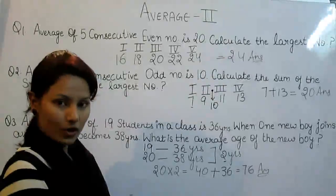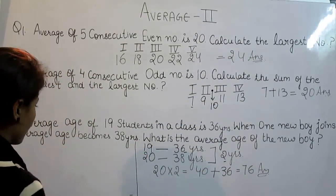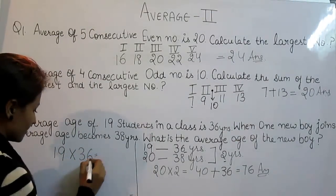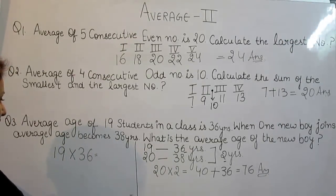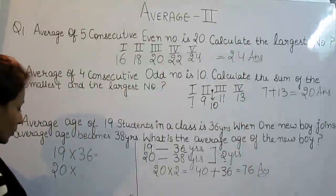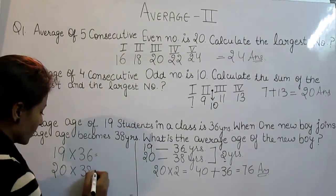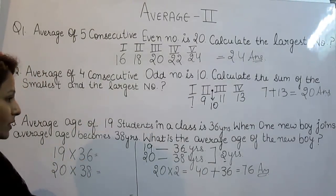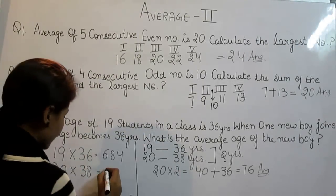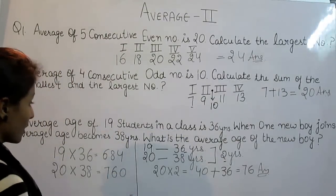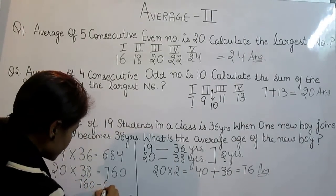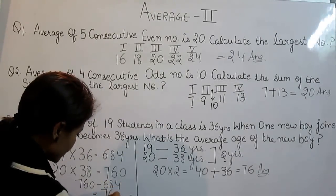This question solved another way. Average age of 19 students is 36. When one new boy joins, the total is 20 and the average becomes 38 years. When we multiply 19 into 36, we get 684. And we multiply 20 into 38, we get 760. We want the average age of the new boy: 760 minus 684 gives the answer, that is 76.